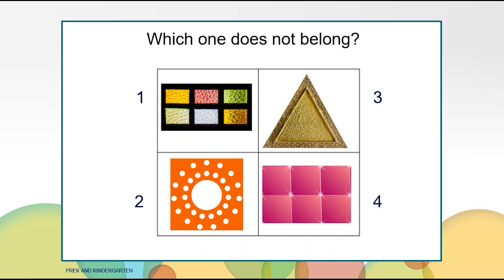Before we get started, let's get our math brains warmed up by looking at these four pictures. Which one does not belong? You might have thought number two doesn't belong because it has circles in it and all the other pictures have shapes with sides. You might have thought number three didn't belong because it is a triangle with three sides, and the other three pictures all have four sides. There are so many possible answers we could come up with.